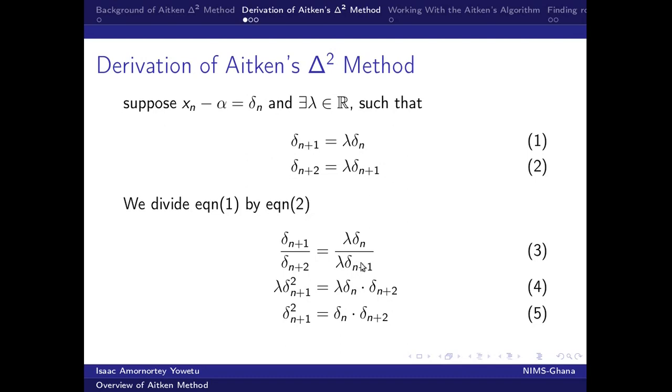And our delta n plus 2 is the same as xn plus 2 minus alpha. Then we can now go ahead to divide equation 1 by equation 2, which gives rise to equation 3. We cross-multiply to get equation 4. We then cancel out our lambdas to get equation 5.